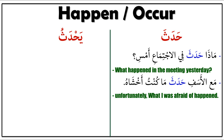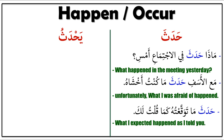Some people will say akhaafu minhu — yes, you can say maa kuntu akhshaa. Next sentence: حَدَثَ مَا تَوَقَّعْتُهُ كَمَا قُلْتُ لَكَ — haditha maa tawaqqa'tuhu kama qultu lak — it means 'what I expected happened, as I told you.' Haditha means happened, maa tawaqqa'tuhu means what I expected, kama means as, qultu lak means I told you.